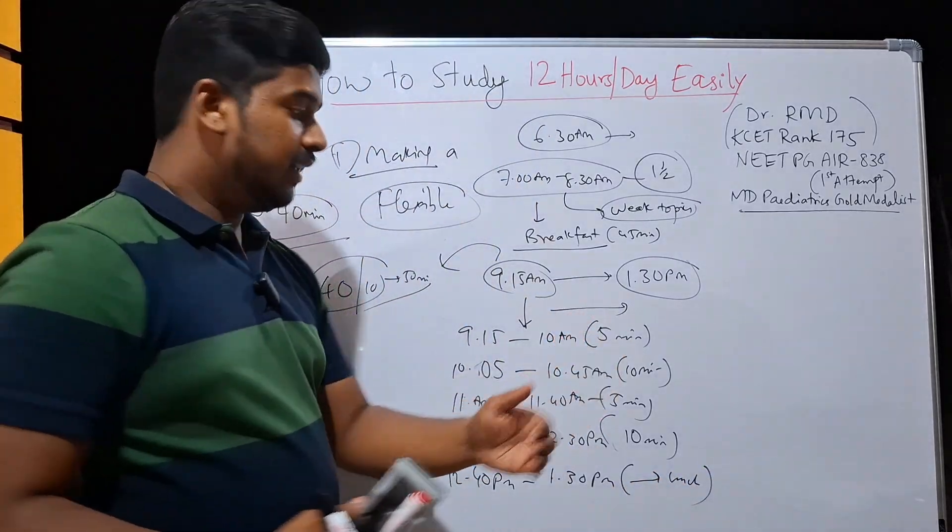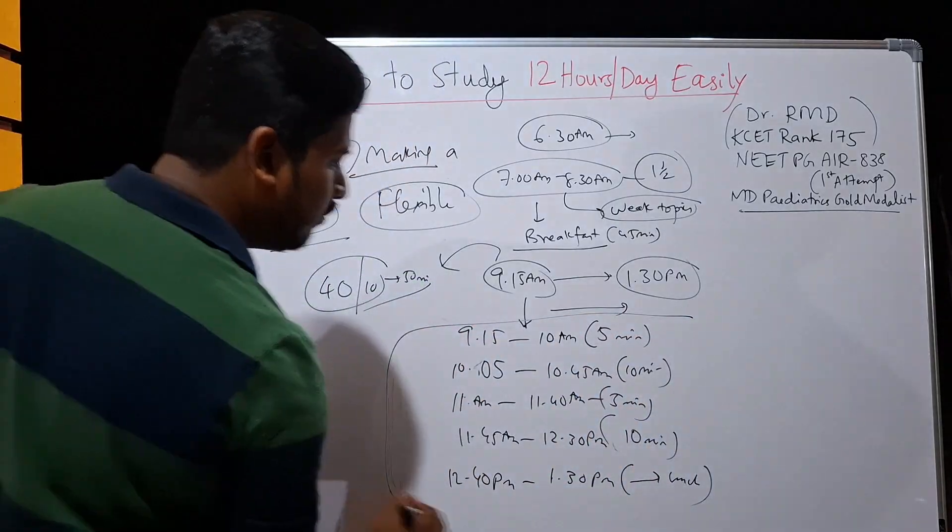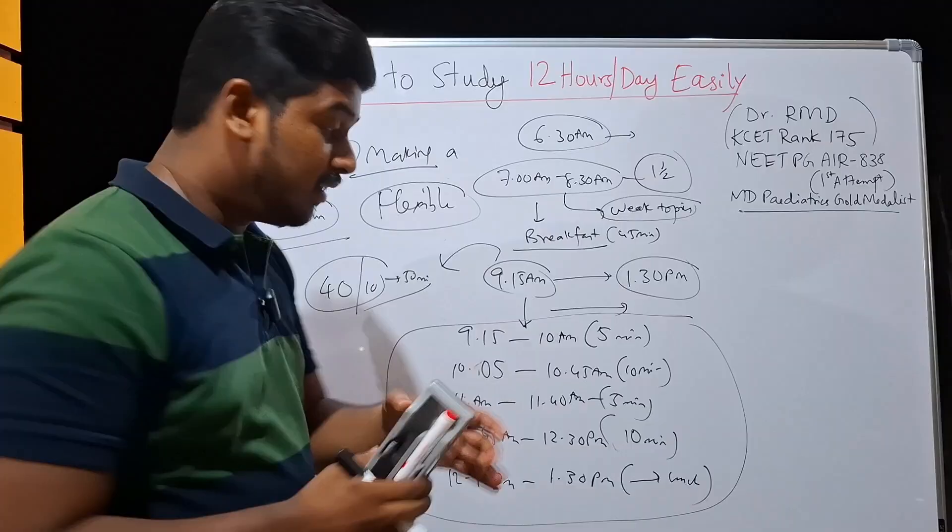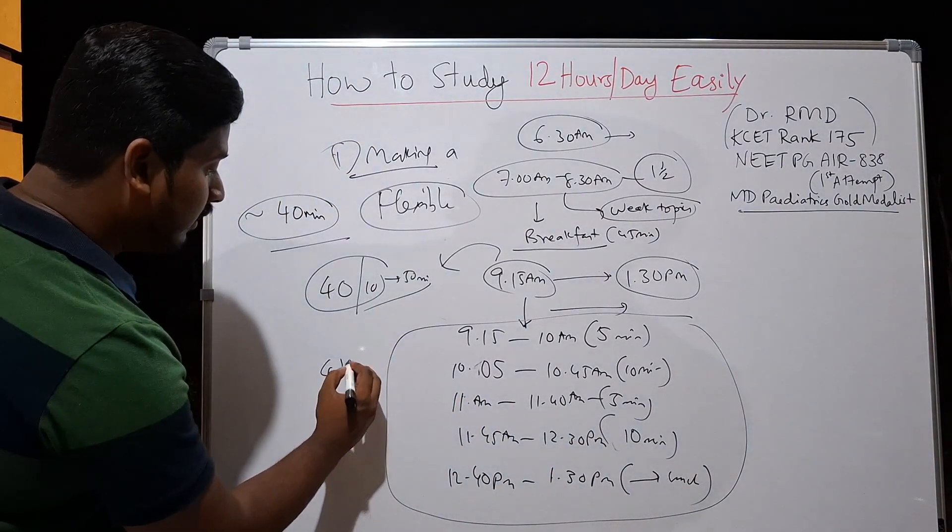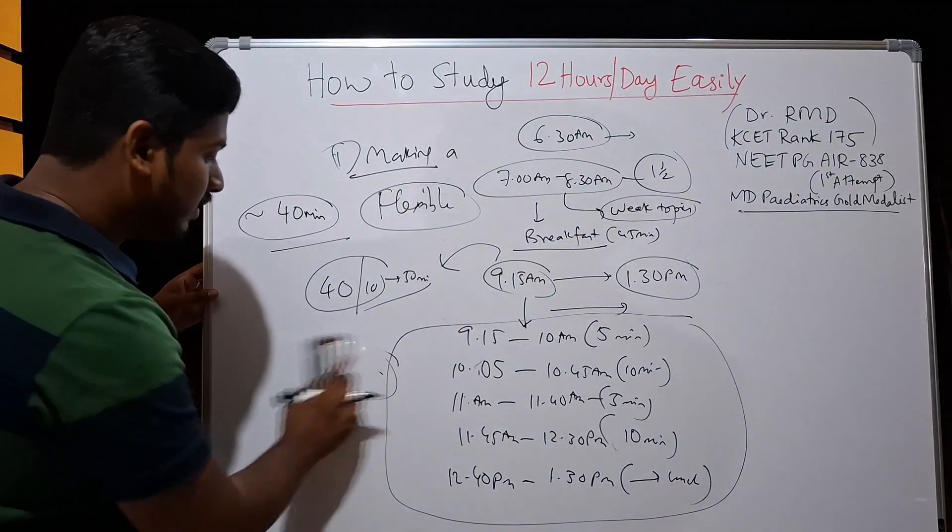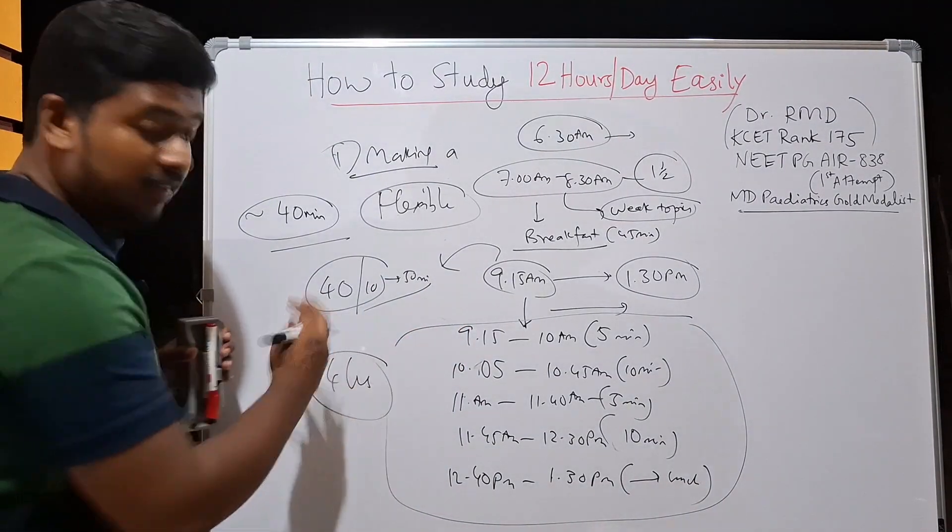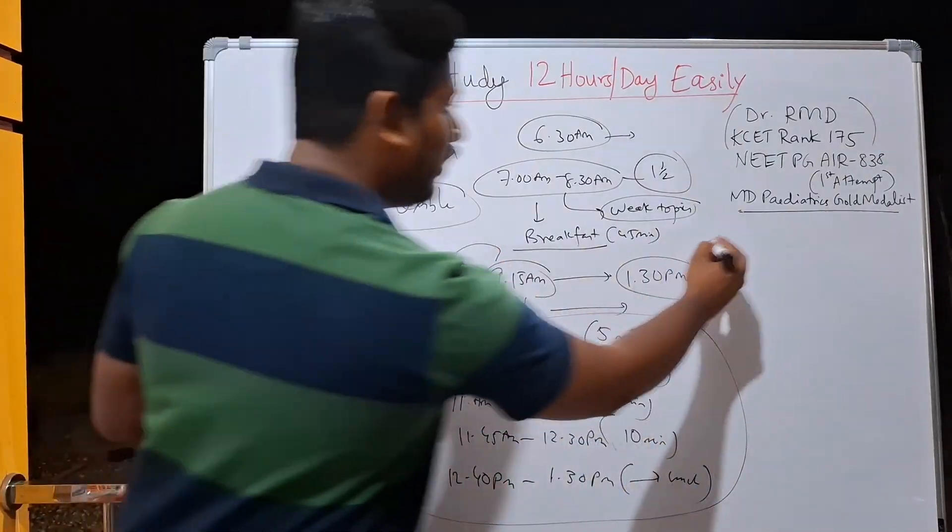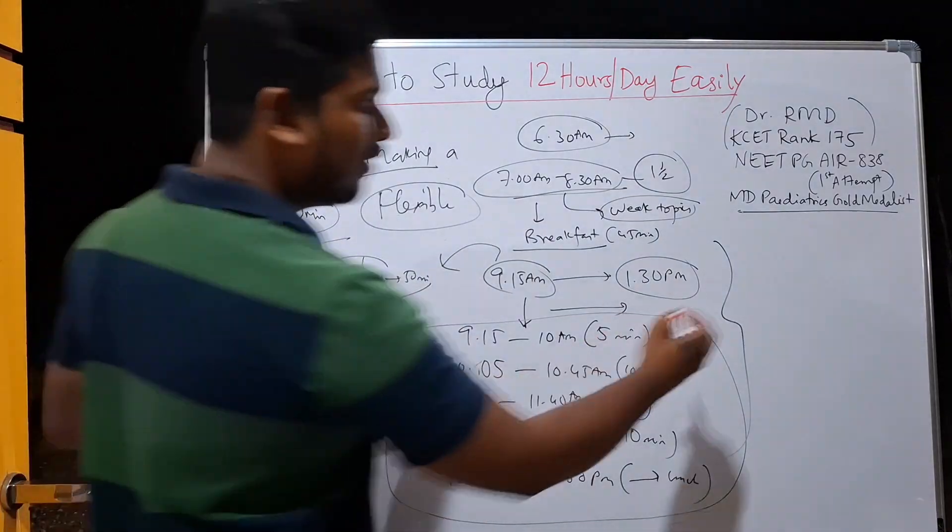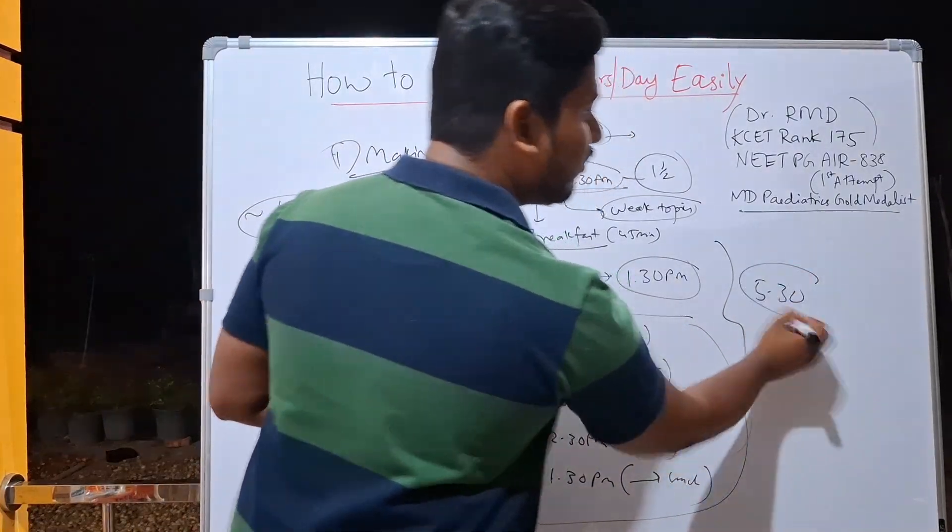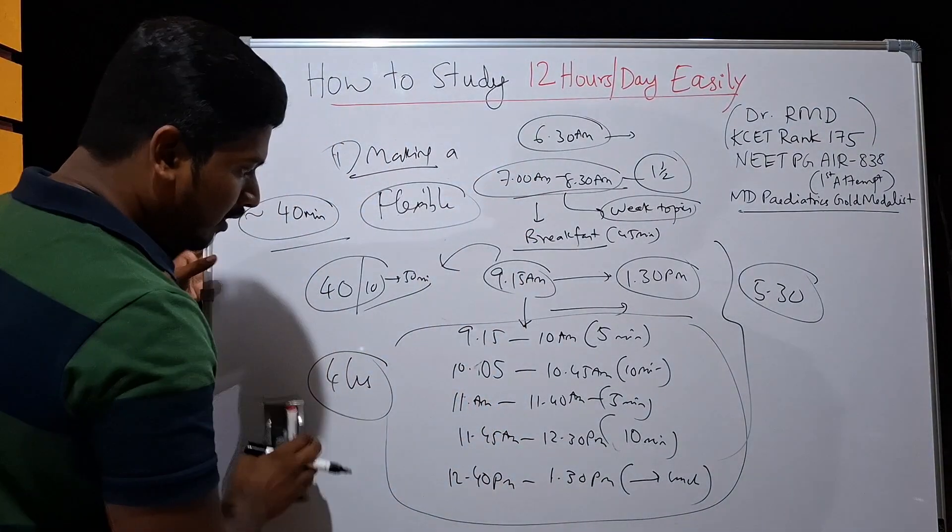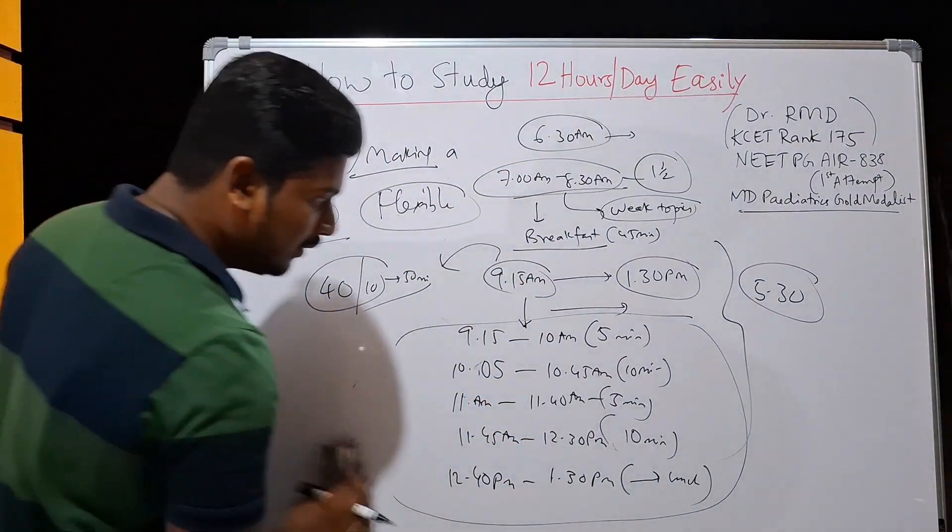So what happens here is you are able to concentrate for 5 Pomodoro cycles. These 5 Pomodoro cycles account to almost 4 hours and 15 minutes. Let's take 15 minutes out of the question, 4 hours of effective study. So before 1:30 p.m. you would have totally done how many hours? 1.5 hours over here and then you will be doing 4 hours. So 5.5 hours of effective study before 1:30 p.m. Got my point? Now what happens after this? I am just going to erase this.